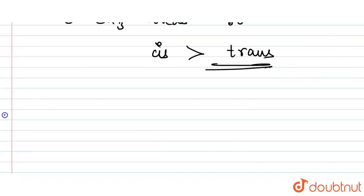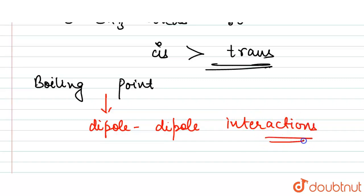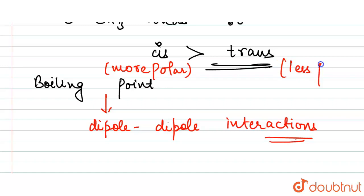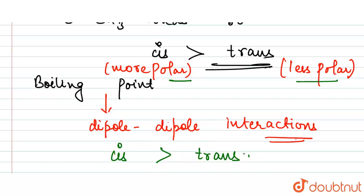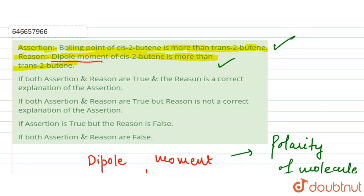Now let's discuss the boiling points of these two isomers. In general, the boiling point of the cis isomer is greater than that of the trans isomer. The boiling point depends on dipole-dipole interactions. Since cis-2-butene has a higher dipole moment and is more polar, while trans-2-butene is less polar, the cis isomer has stronger intermolecular interactions. Therefore, the cis isomer has a higher boiling point. The boiling point of cis-2-butene is approximately 277 K, while that of trans-2-butene is approximately 274 K.